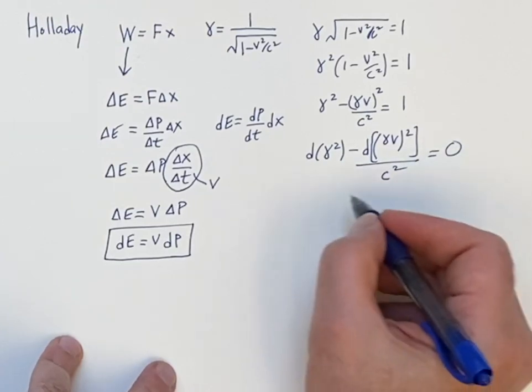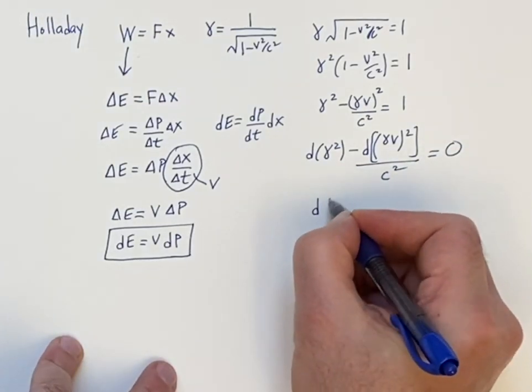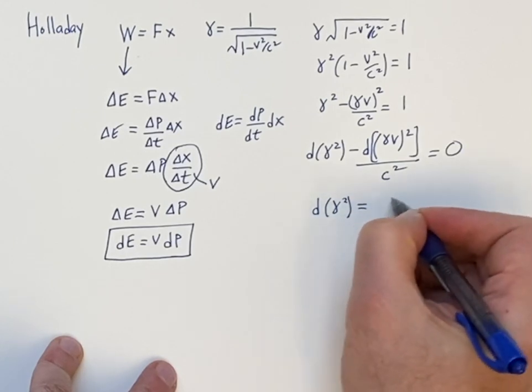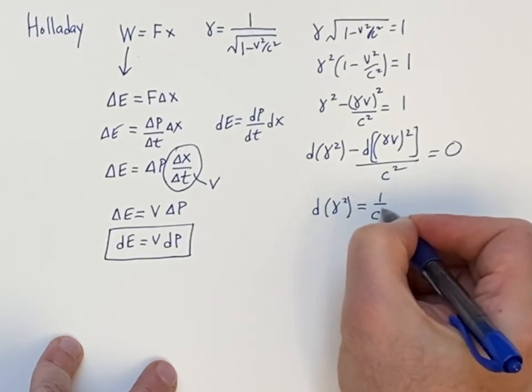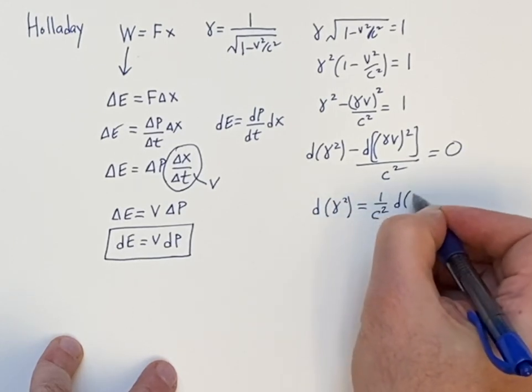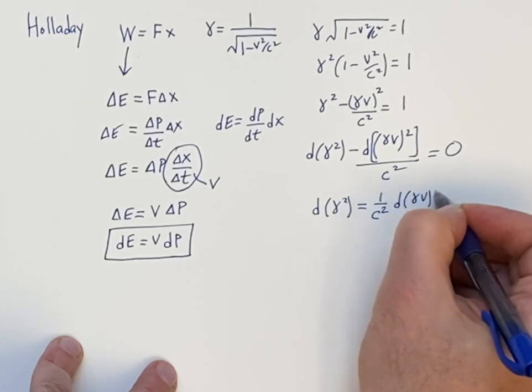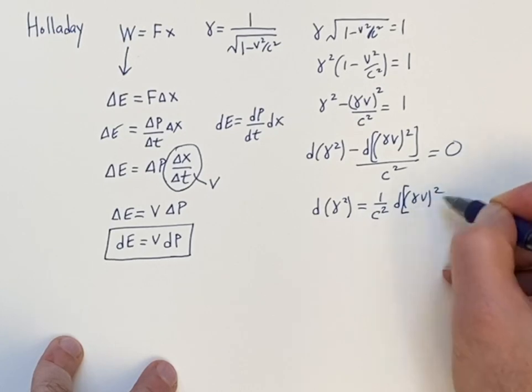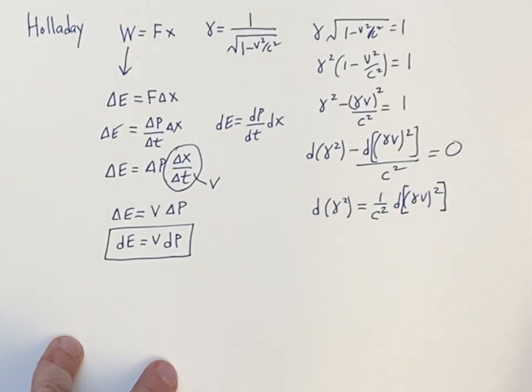So let's bring this on the other side of the equation and write it a little bit more neatly. And then we have here 1 over C squared, d gamma V squared. And to make sure that our notation is clean, let's just go ahead and do that.